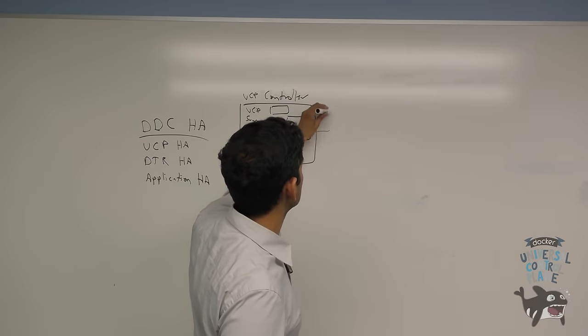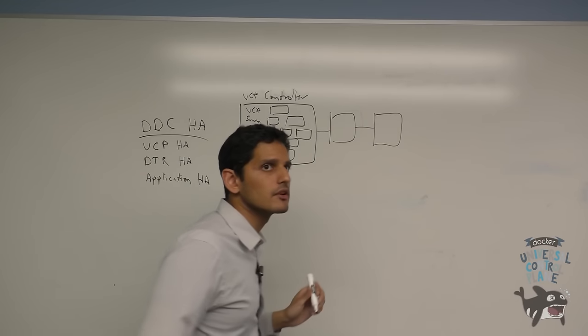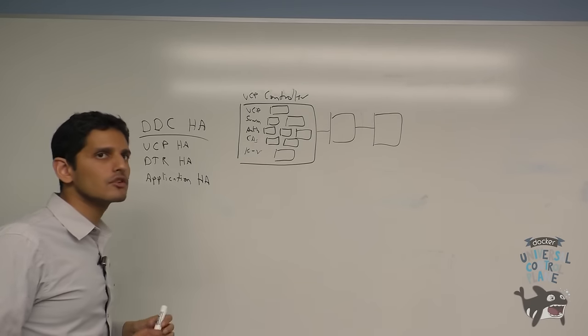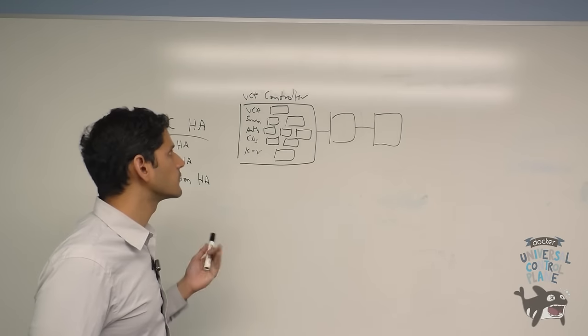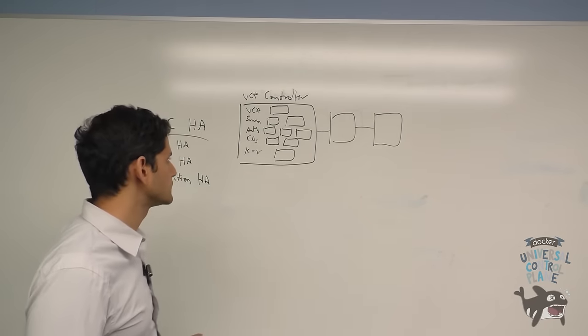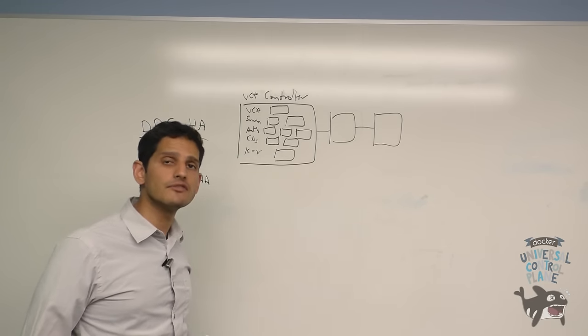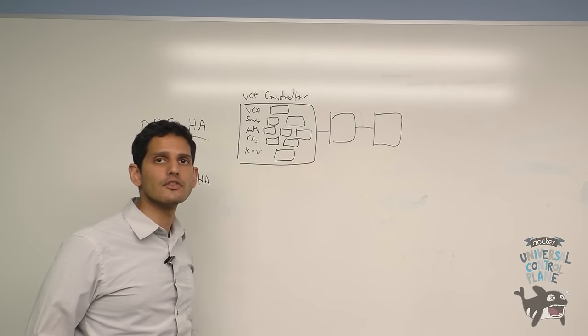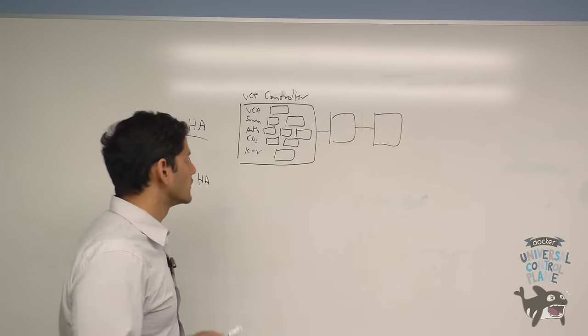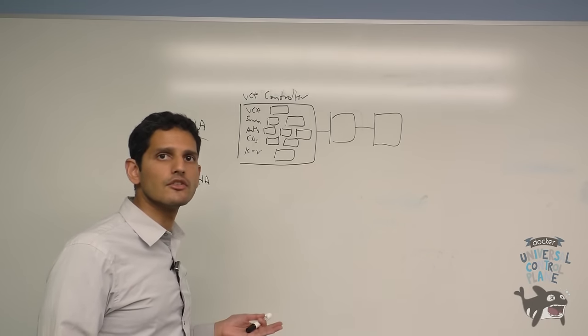So with UCP, you can have three, five, or seven UCP controllers as a part of your cluster. The number of controllers you have determines the number of failures you can tolerate if one of those controllers goes down in the cluster. So if you have three controllers, you can tolerate one failure. If you have five controllers, you can tolerate two failures. And if you have seven controllers, you can tolerate three failures. The trade-off of course is the number of nodes that you're willing to use for your controllers in your deployment.